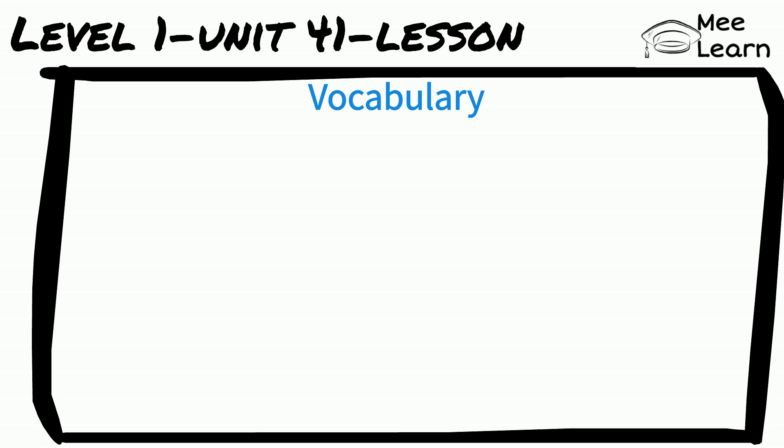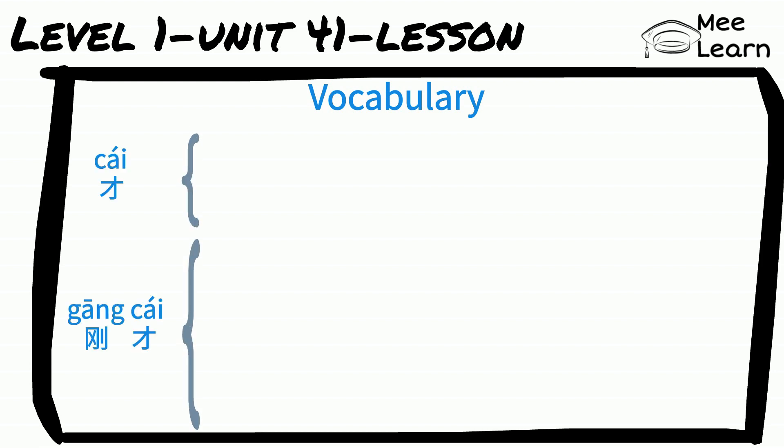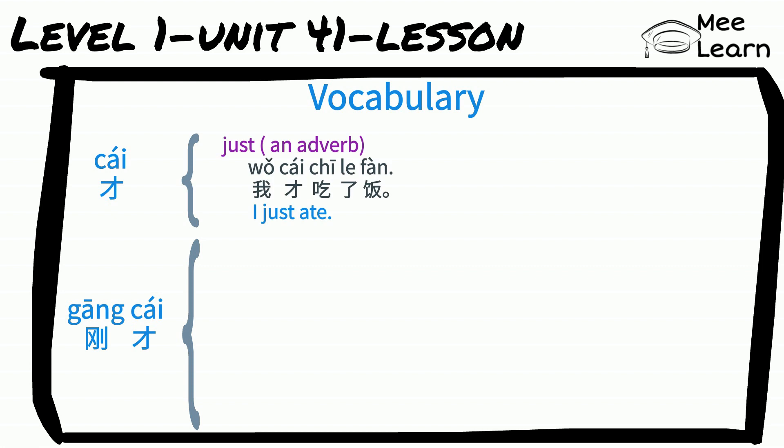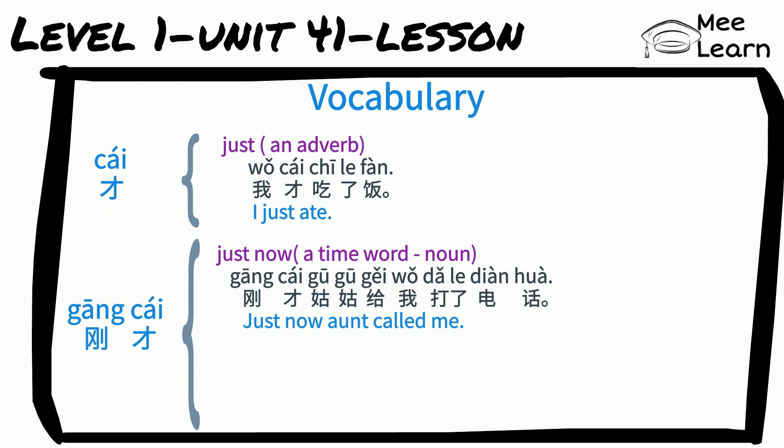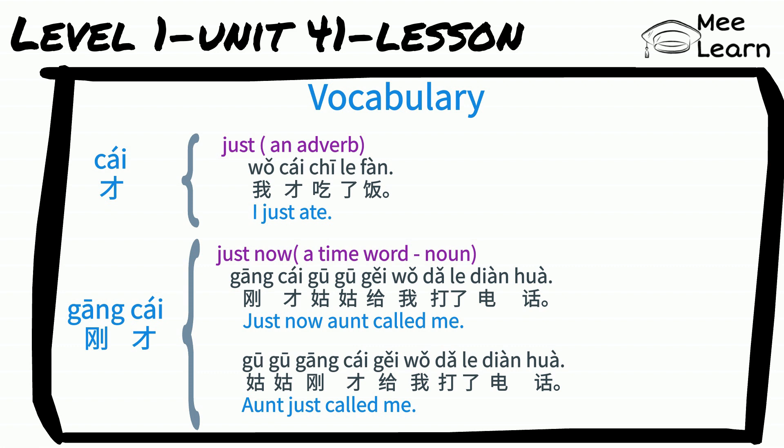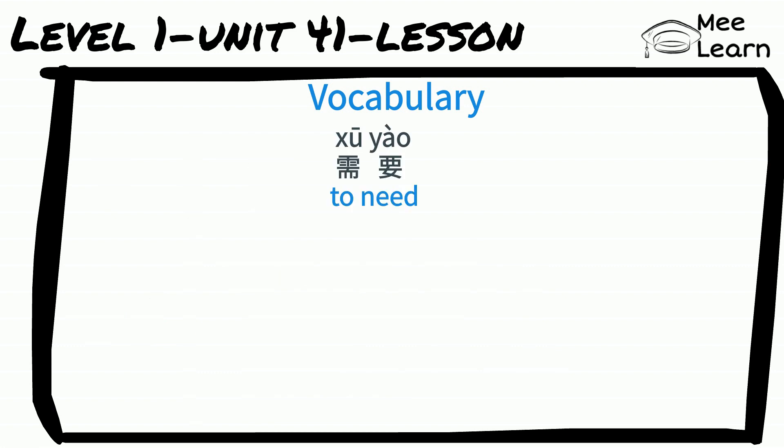Let's compare these two words: 才 and 刚才. 才 is an adverb meaning 'just,' put in front of a verb. For example: 我才吃了饭. 刚才 means 'just now' and is a noun — a time word you can put in front of or after a subject. For example: 刚才姑姑给我打了电话 (Just now, aunt called me.) 姑姑刚才给我打了电话 (Aunt just called me.)